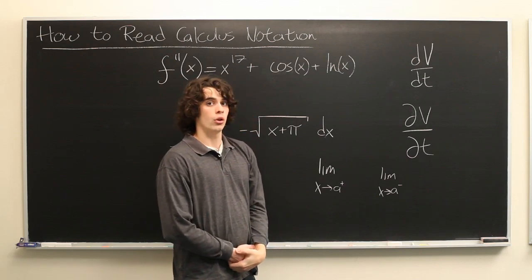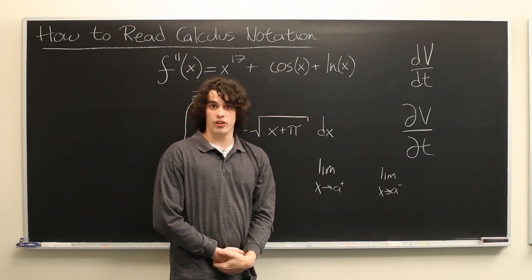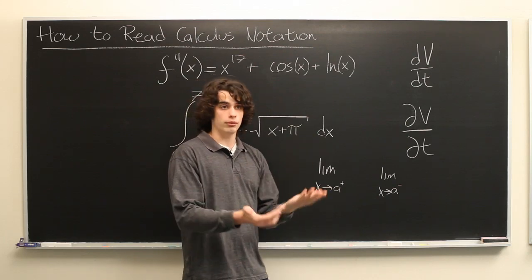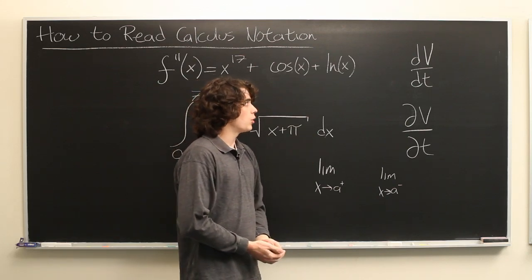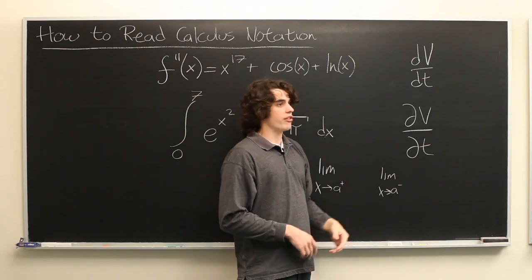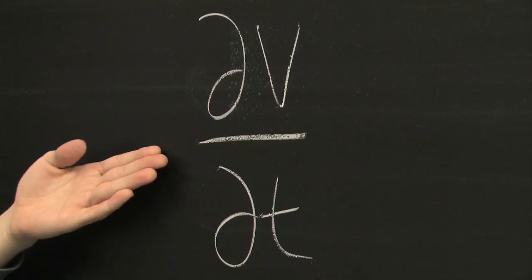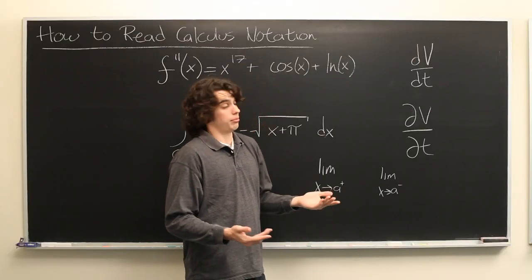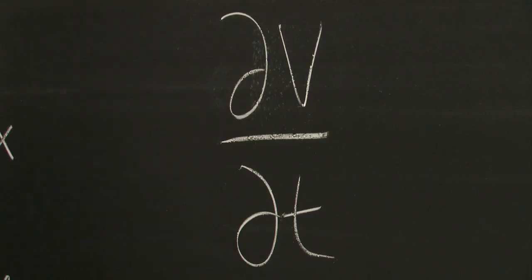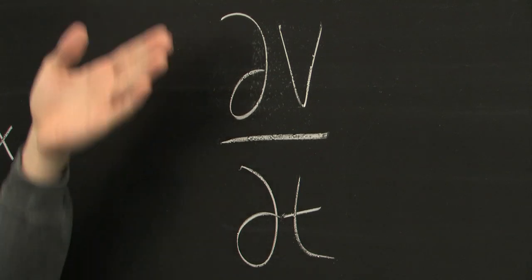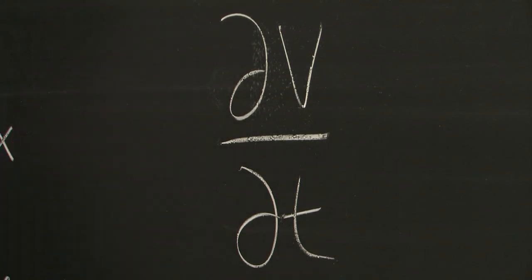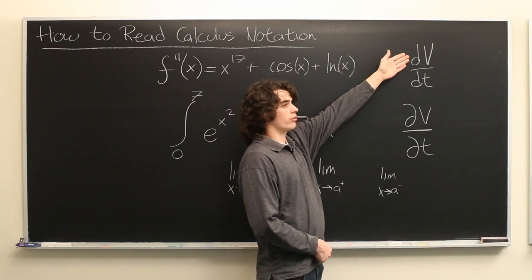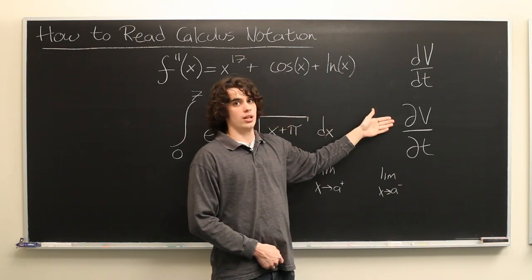If, however, your function v is a multivariable function, perhaps a function of t and x and y, for example, you would not use the standard derivative, but instead the partial derivative, which is indicated by this notation. However, the two are pronounced very similarly. This is also dv dt. And the meaning of each is typically clear by the context. It's unlikely that you would have a single variable function v and a multivariable function v in the same problem.